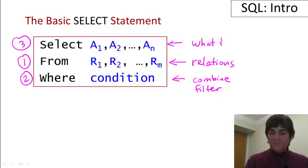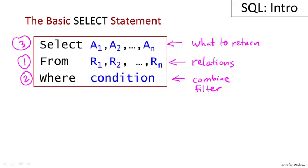If you're familiar with relational algebra, this SQL query is equivalent to the relational algebra expression where you project the set of attributes A1 through An, and then you select. By the way, this selection corresponds to the where. You select the condition on the cross product of the relations listed in the from clause. That's the equivalent in relational algebra.